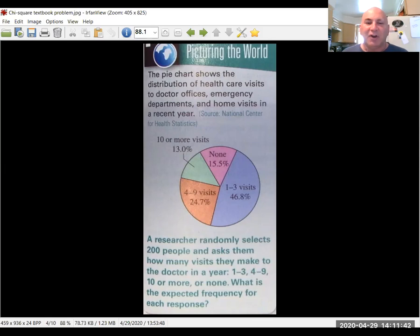Now, this is population data. This is what we think the entire population looks like. Now, it says at the bottom, a researcher randomly selects 200 people and asks them how many visits they make to the doctor in a year. What is the expected frequency for each of these? All righty. Let's take a look at what that means.